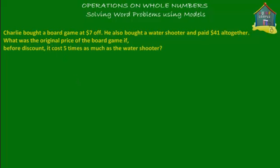The problem given is: Charlie bought a board game at $7 off. He also bought a water shooter and paid a total of $41 altogether. What was the original price of the board game if before discount it cost five times as much as the water shooter? The three things given to us are: the board game was at $7 off, the total price Charlie paid was $41 for both items, and before the discount the board game was five times as much as the water shooter.